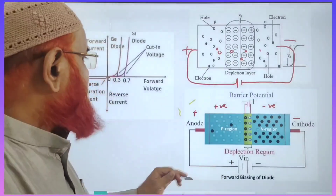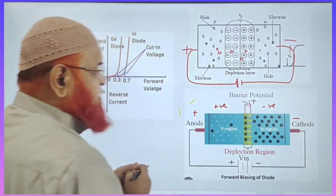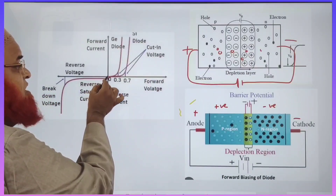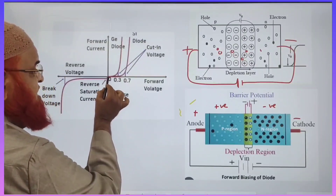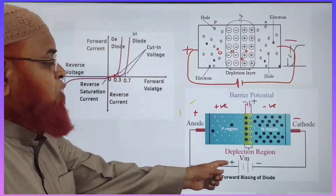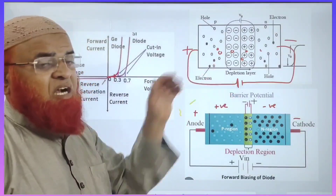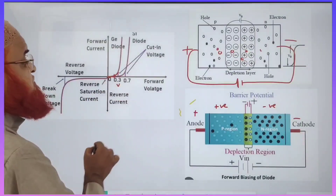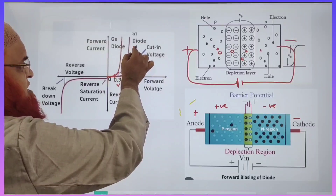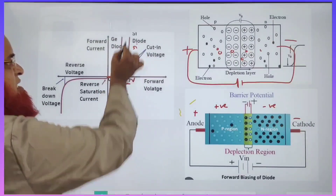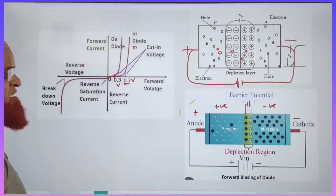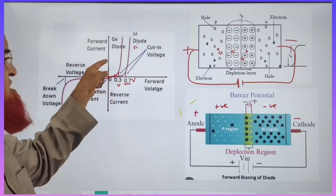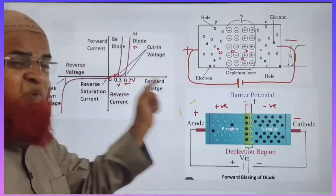If this is a potential barrier, to cancel the potential barrier, we need a certain voltage wasted to cancel it. It is different for silicon and germanium. As soon as you apply the forward voltage, current will not start flowing directly — some amount of potential is wasted. Applied voltage has to cancel the potential barrier, then only current starts flowing. The potential barrier is eliminated at 0.3 volts for germanium, and for silicon diode it is eliminated at 0.7 volts. At 0.3 volts, the current starts increasing. Germanium has a very less potential barrier; silicon has a higher potential barrier.